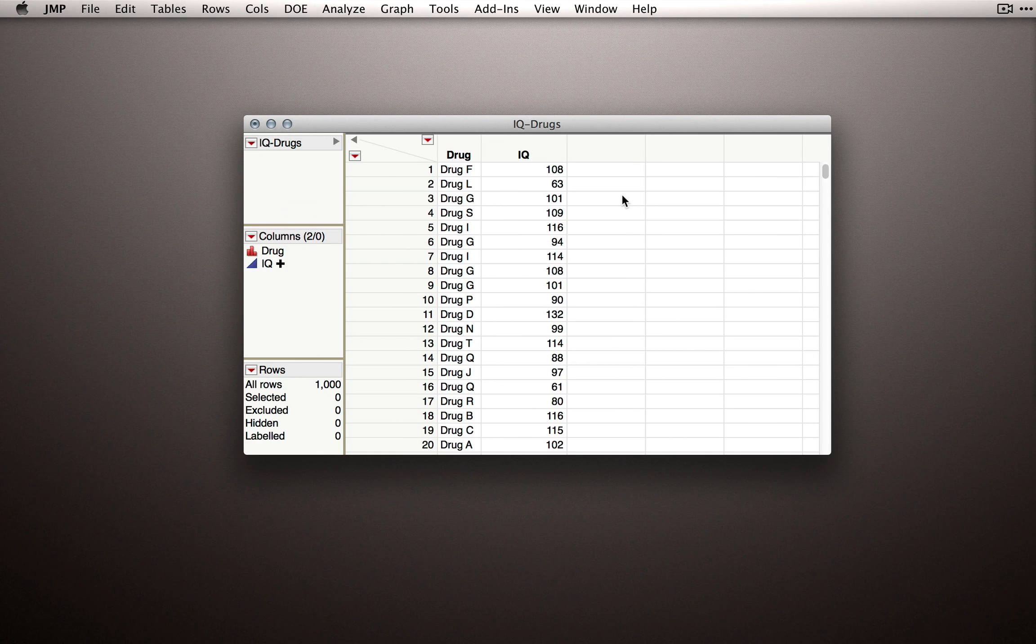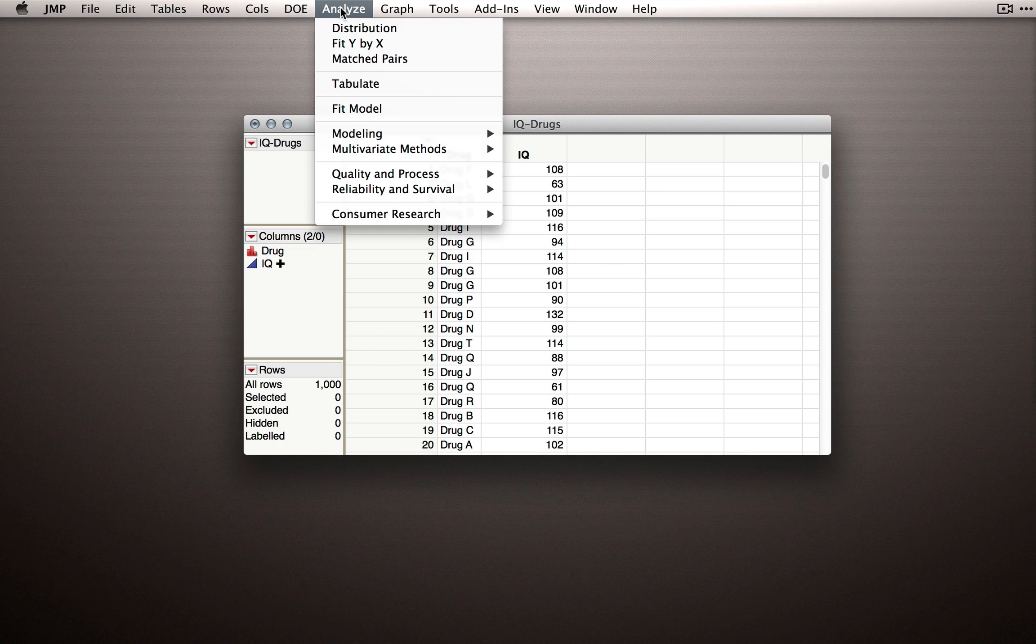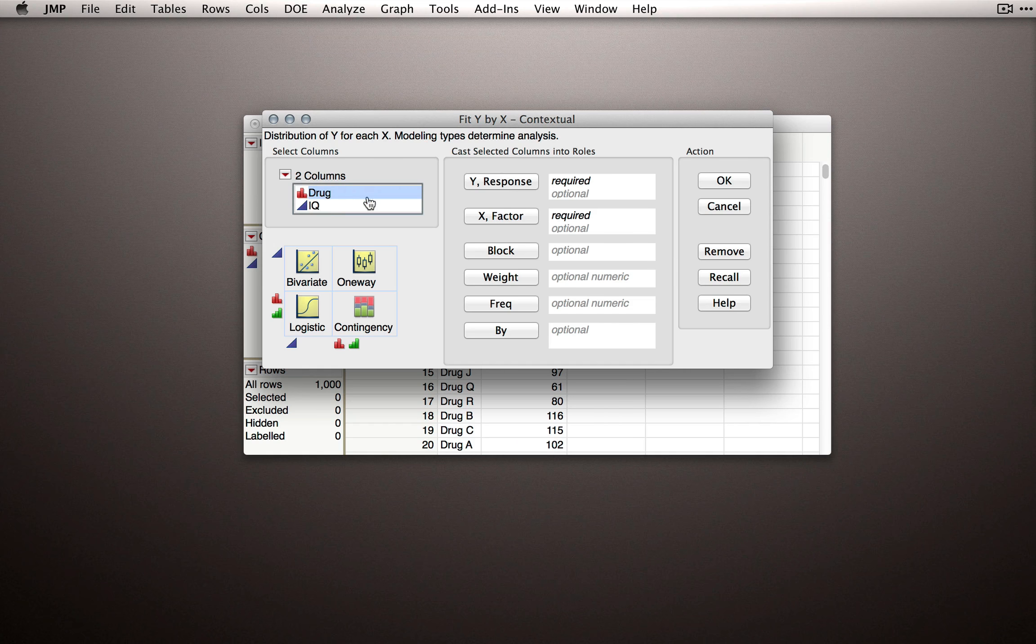Let's produce the output like we did before. I'll go to the Analyze menu and select Fit Y by X. Next, I'll take Drug and put that as my X factor, and IQ I'll put as my Y response. When I click OK, Jump will return the basic dot plots for the different drugs.